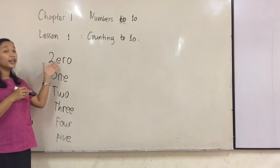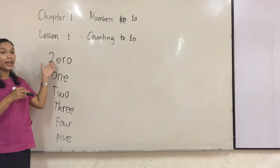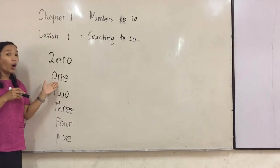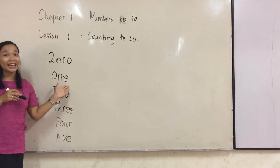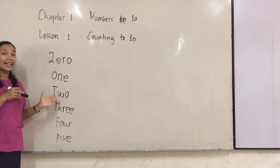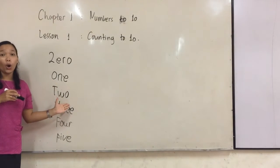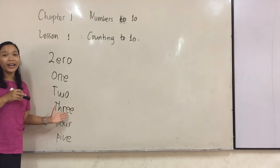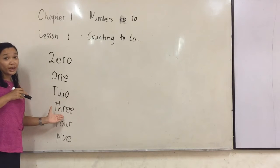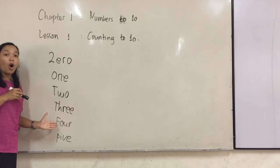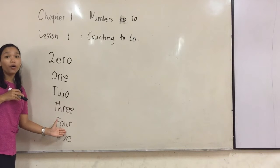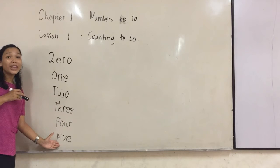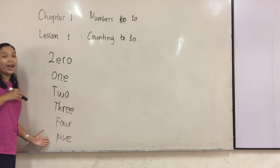Here, zero Z-E-R-O. And then one O-N-E. One, two T-W-O. Two, three T-H-R-E-E. Three. Four F-O-U-R. Four. Five F-I-V-E. Five.